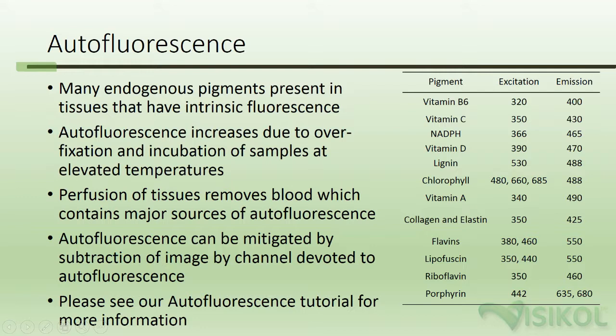Autofluorescence. Many endogenous pigments present in tissues have intrinsic fluorescence. Autofluorescence can increase due to overfixation and incubation of samples at elevated temperatures. Perfusion of tissues removes blood, which contains major sources of autofluorescence, and is recommended for larger tissues. Autofluorescence can be mitigated by subtraction of the image by a channel devoted to the autofluorescence channel. Please see our autofluorescence tutorial for more information.